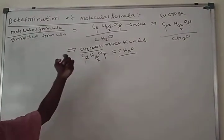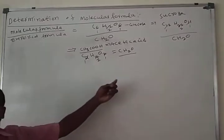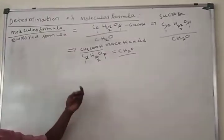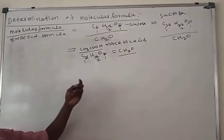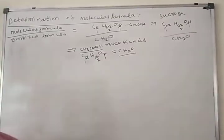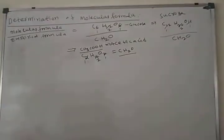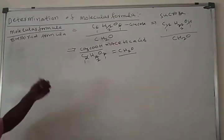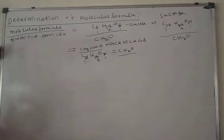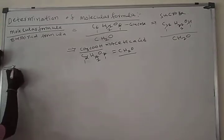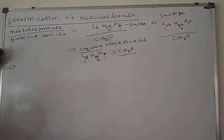To summarize: the exact atoms present in a molecule of the compound is called the molecular formula. The simplest form of the molecular formula is called the empirical formula. This is about molecular formula and empirical formula.